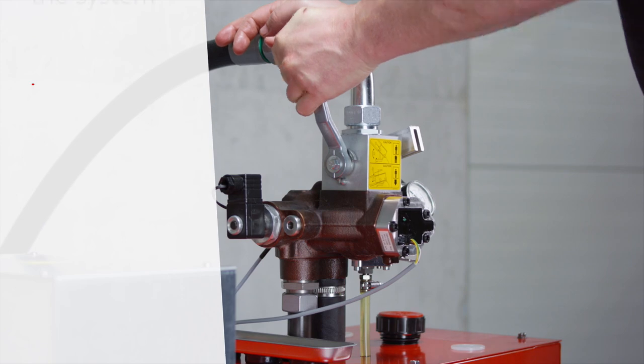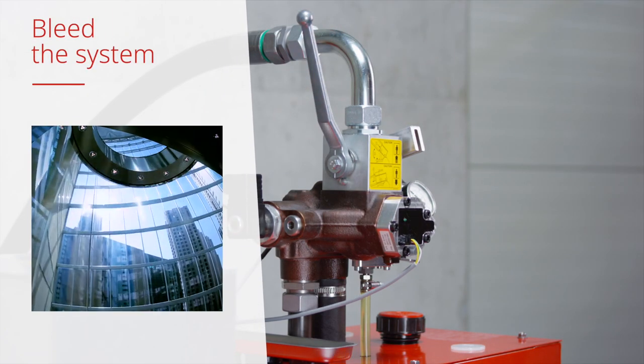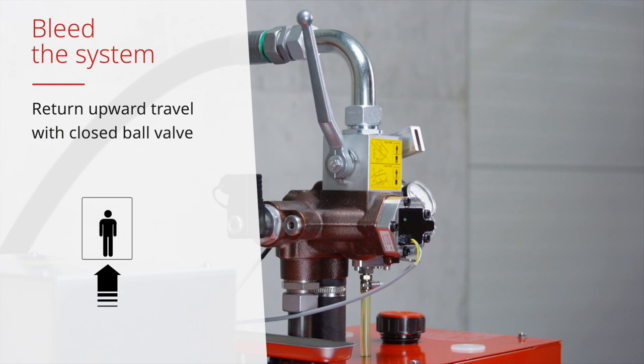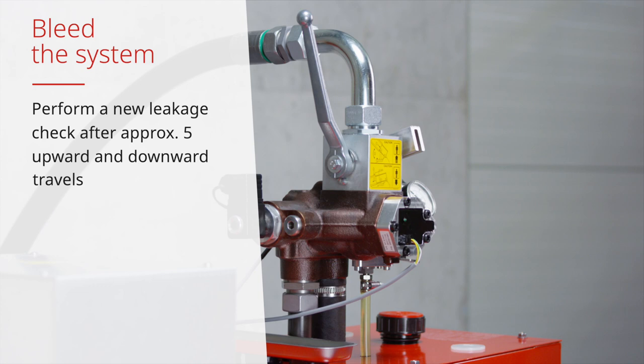To bleed the system, perform a downward travel or, with the ball valve closed, perform a return upward travel for 10 seconds. Perform a new leakage check after approximately 5 upward and downward travels.